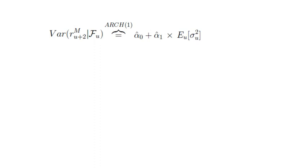So α̂₀ + α̂₁ times the conditional expectation of σ²_U conditional on F_U. Now, given that σ²_U is measurable as of time U, that goes out of the expectation. And we can therefore rewrite that as α̂₀ + α̂₁ times σ̂²_U. And we've just determined the σ̂²_U. And therefore we just rewrite that as the variance of R^M_(U+2) conditional on F_U is simply α̂₀ + α̂₁ times the variance of R^M_(U+1) conditional on F_U.